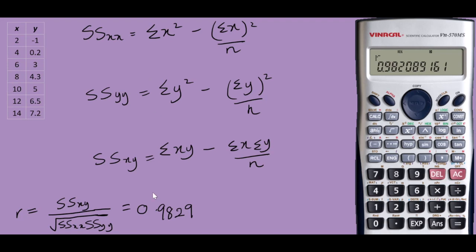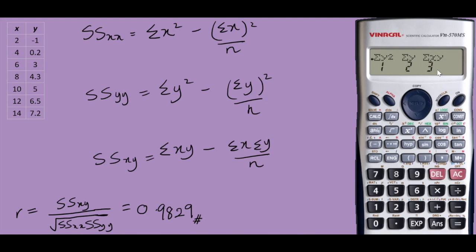We are done unless you are asked to work out the formulas of the sum of squares in order to find your correlation coefficient. The best way to do this is to press Shift 1. Over here you have the values of sum of x squared, sum of x, and n. If you press the right arrow you have sum of y squared, sum of y, and sum of xy. We simply choose all of these values and insert them to calculate the sum of squares.